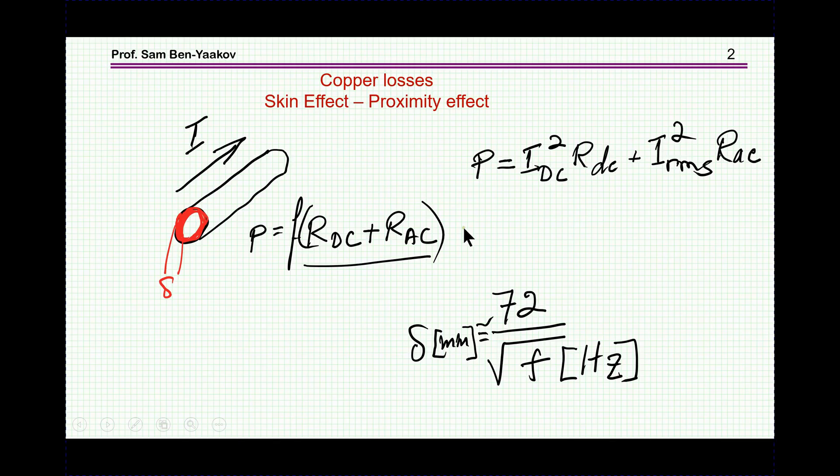So the total loss of a current flowing through an inductor, if there is a DC component and an AC component, then it'll be the square of the DC times the DC resistance, which depends on the total cross-section, and IRMS times RAC, which depends on the outer belt here in which carriers are present.